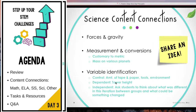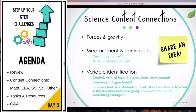Some science connection ideas: forces and gravity obviously play a great role in tower designs. Depending on whether you've done stability, you might have built in something for earthquakes, natural disasters, or weather like wind. Measurement and conversions, customary to metric. You could talk about mass on various planets if you've incorporated weights. Variable identification is one of my favorites for the tower because it's something my students struggled with for years, and anytime I can get extra practice identifying variables and working on the scientific method, I'll do that.